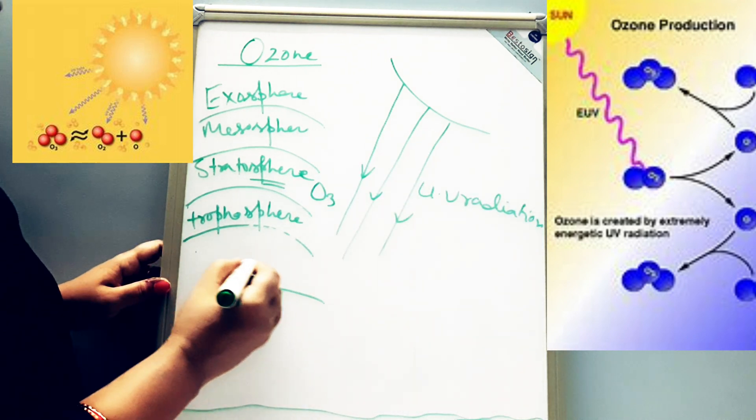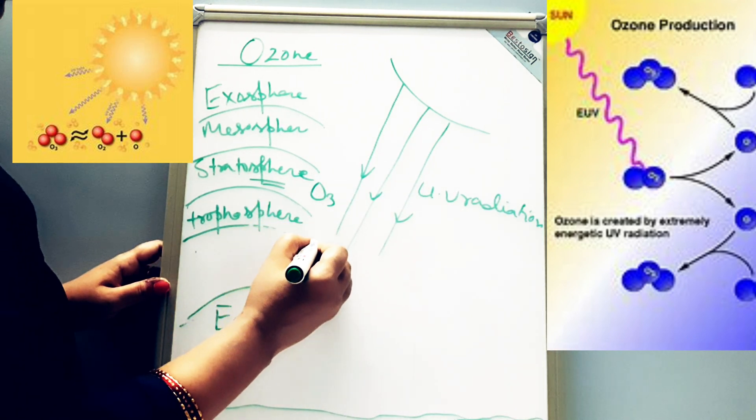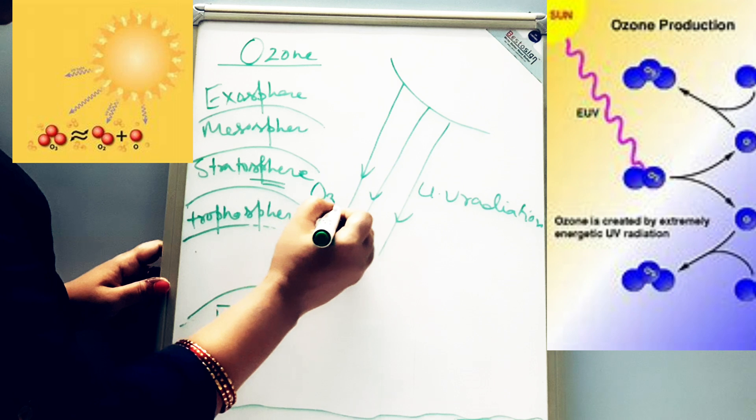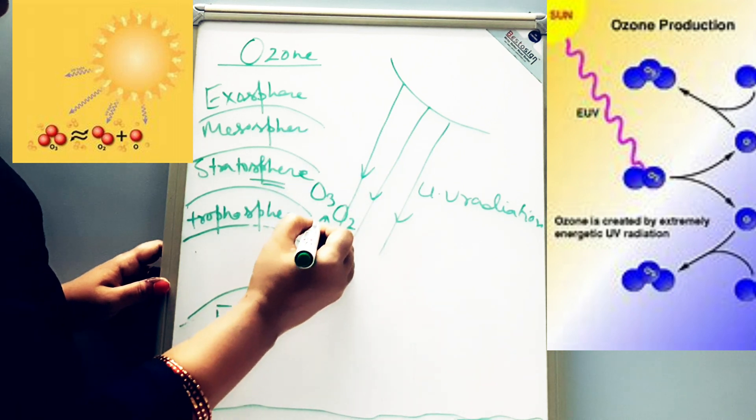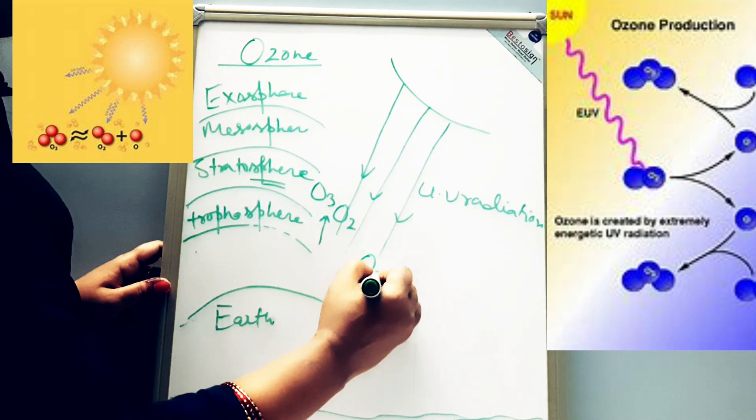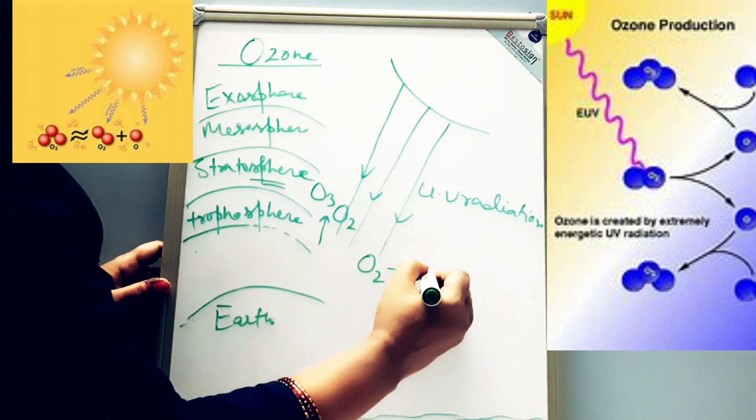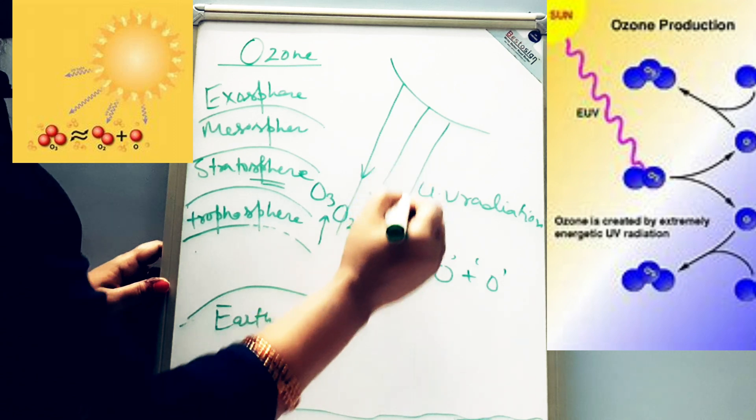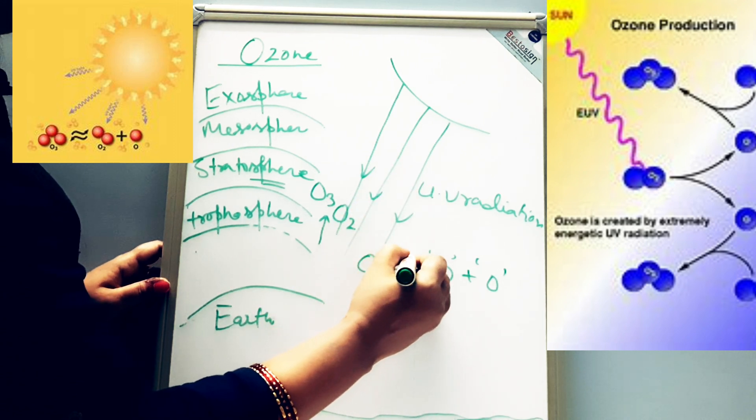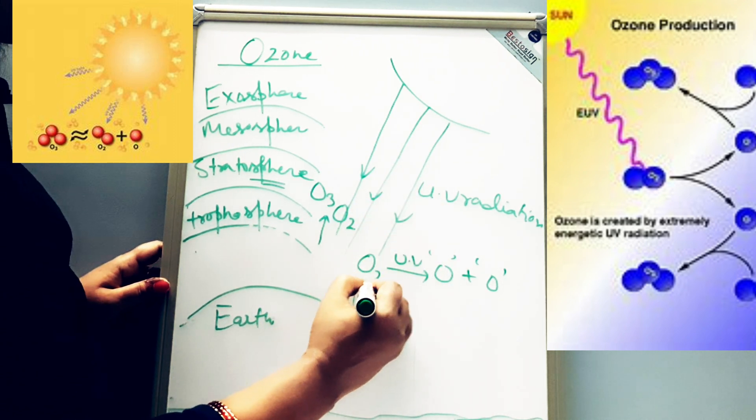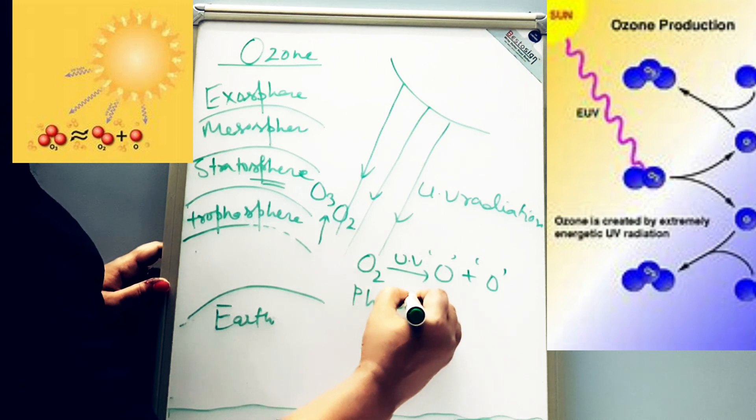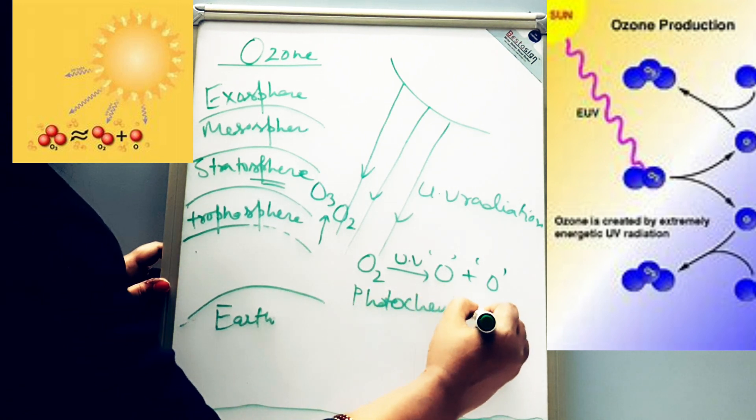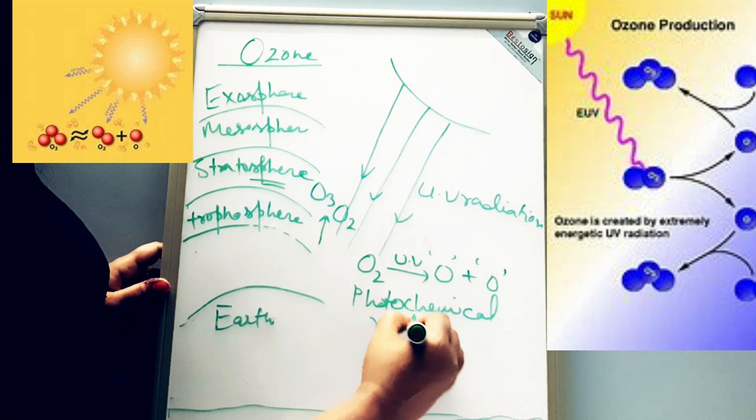Now what happens: from troposphere, oxygen reaches to stratosphere. O₂ reaches to stratosphere. This O₂ dissociates into nascent oxygen with the help of UV rays of Sun. This is called photochemical reaction.